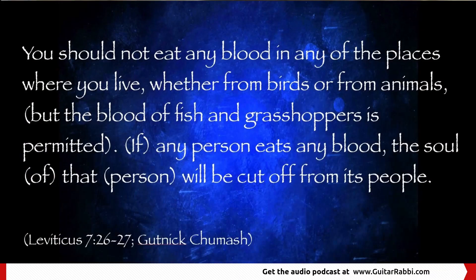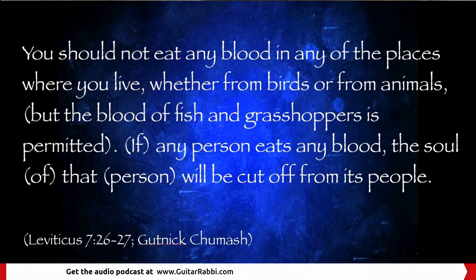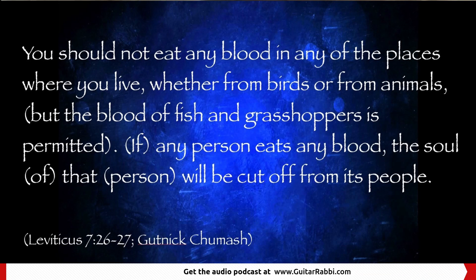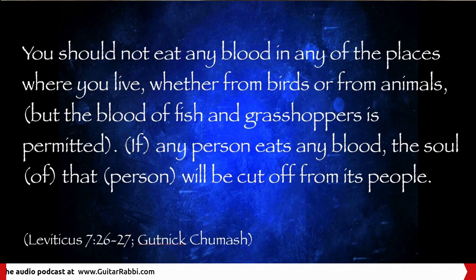We're going to Vayikra — Leviticus chapter 7, verses 26 through 27. It says: 'You should not eat any blood in any of the places where you live, whether from birds or from animals, but the blood of fish and grasshoppers is permitted. If any person eats any blood, the soul of that person will be cut off from his people.' Within Acts chapter 15, one of the first things mentioned is not eating blood — making sure your meat doesn't have blood in it.